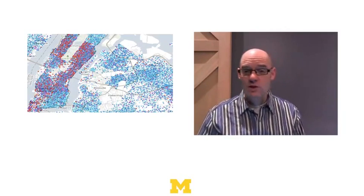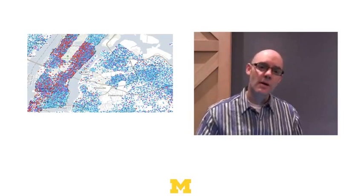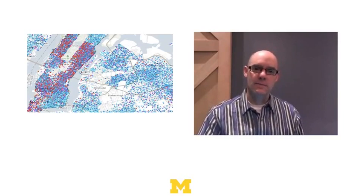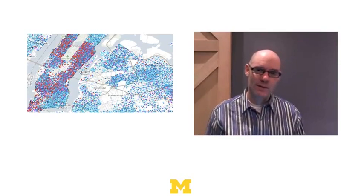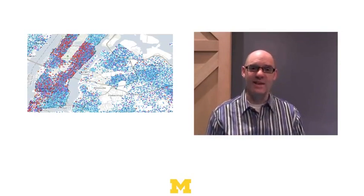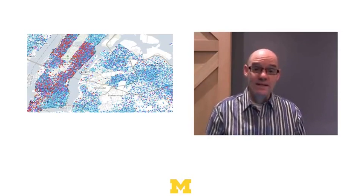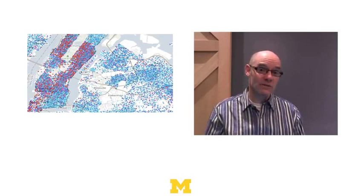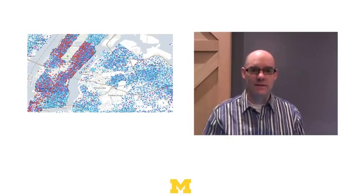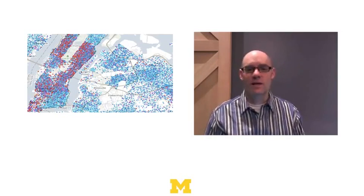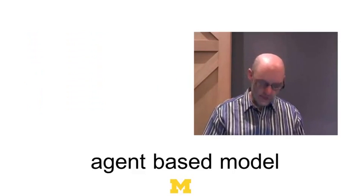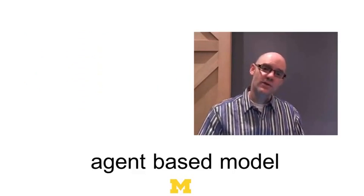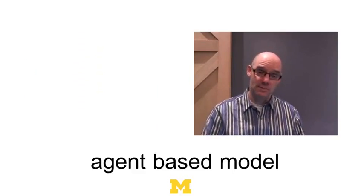This is what Schelling wanted to understand — he wanted to construct a model to make sense of this. Now you might say, we don't need a model. It's obvious: maybe people are racist, people don't like to live with people who don't look like them, and that's why we get segregation. Well, that's what Schelling set out to explore using a model. He constructs what we call an agent-based model.